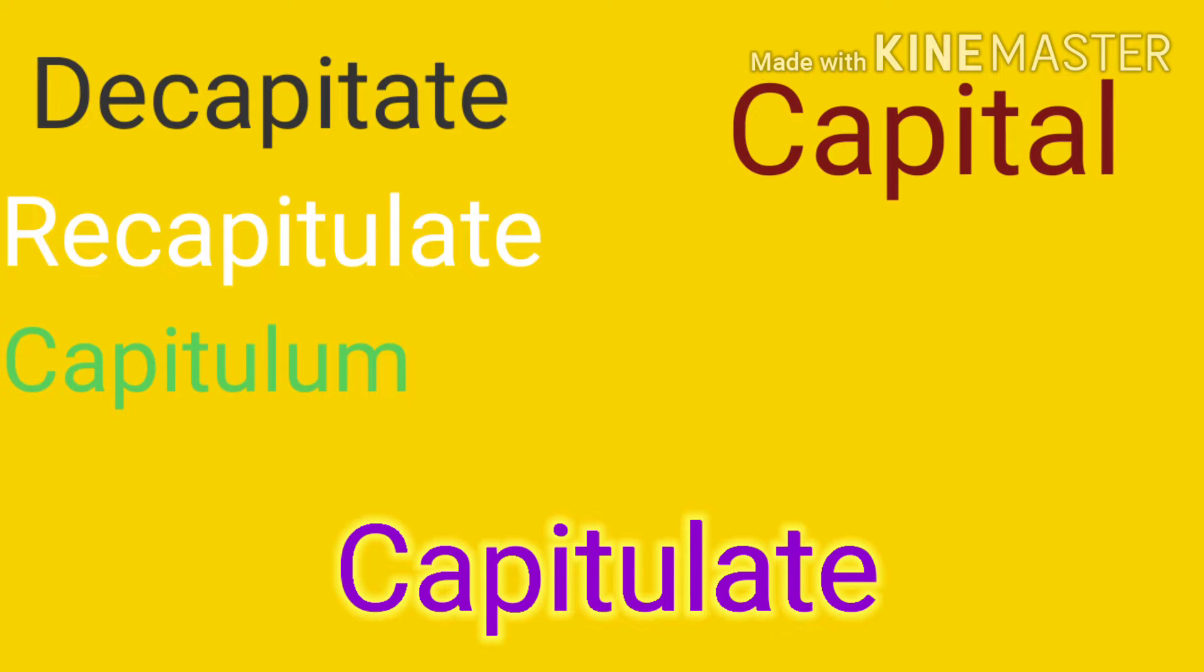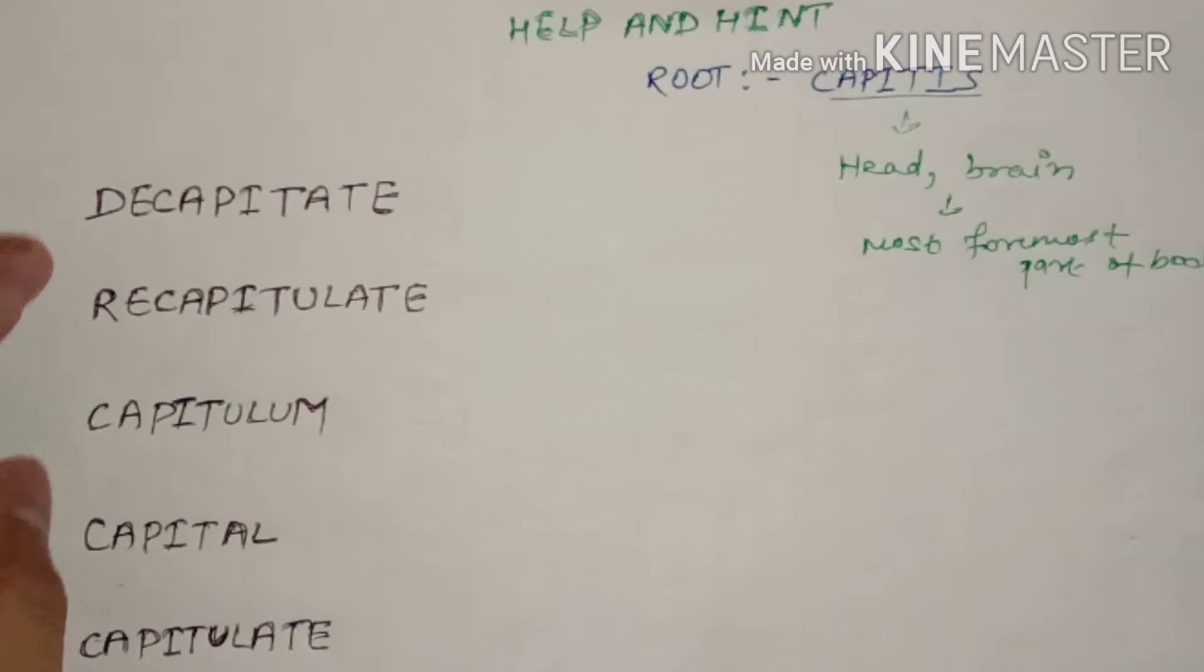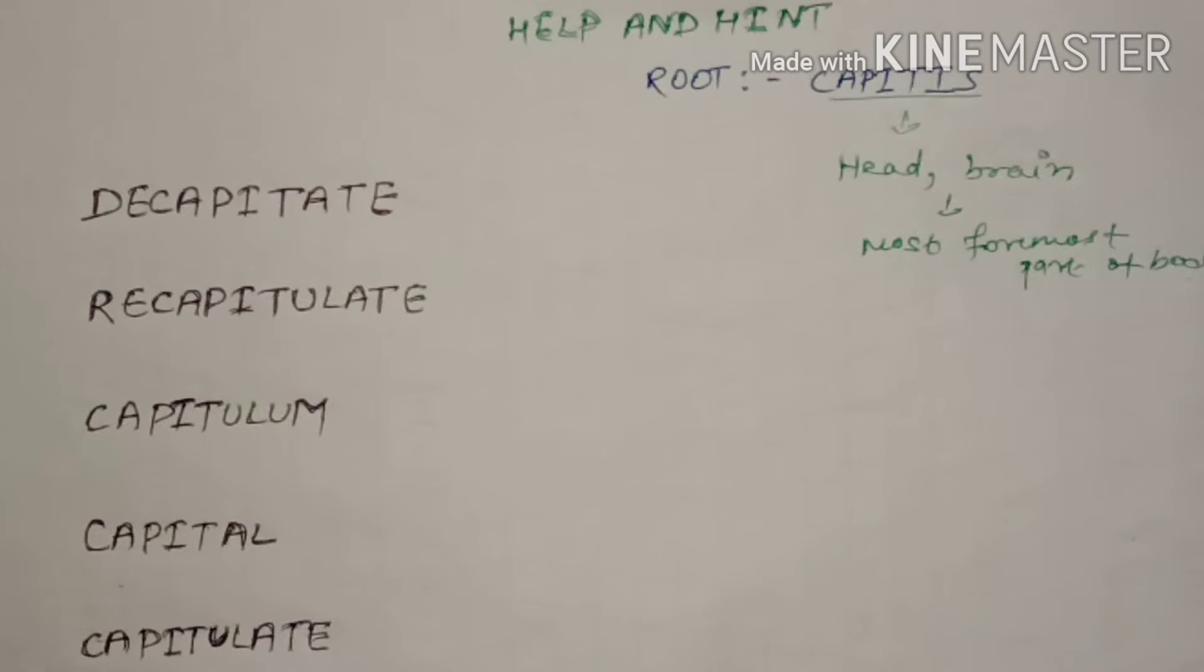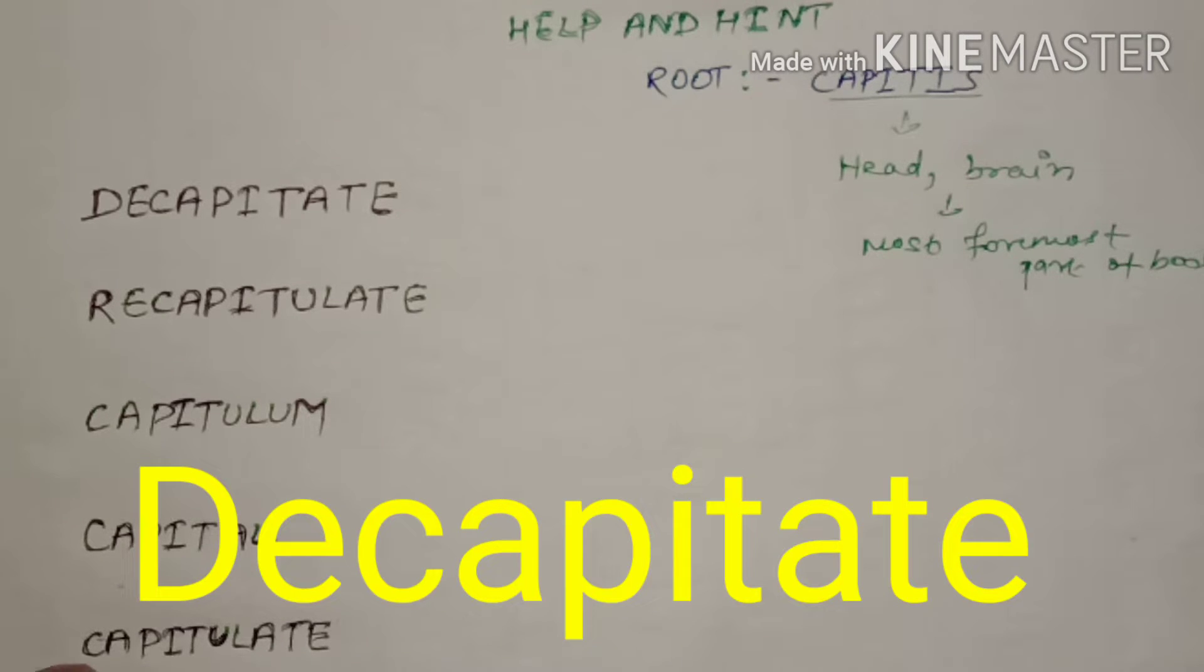Now we have five words which are built on capit and they are decapitate, recapitulate, capitulum, capital, and capitulate. So let us understand the meaning of the words and also how the words have been created.